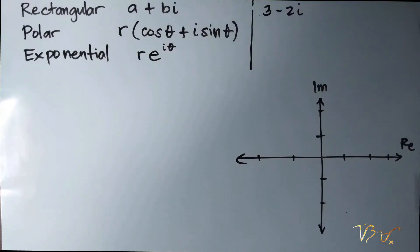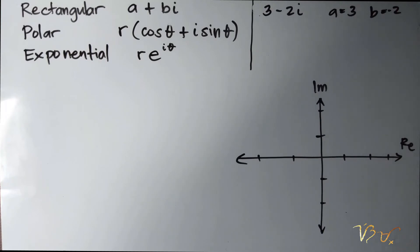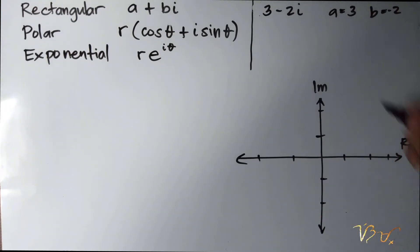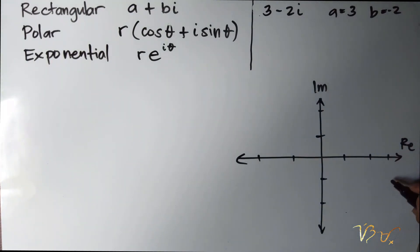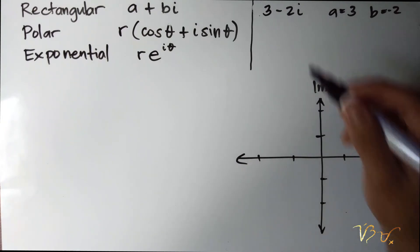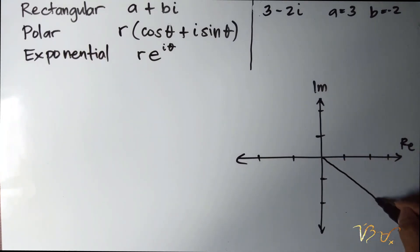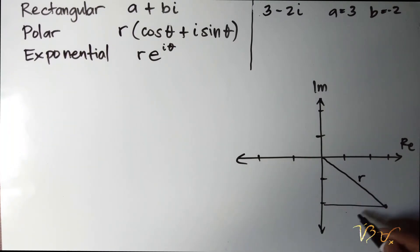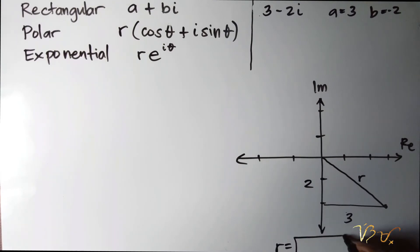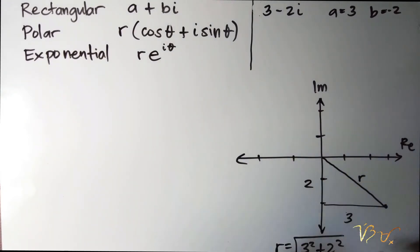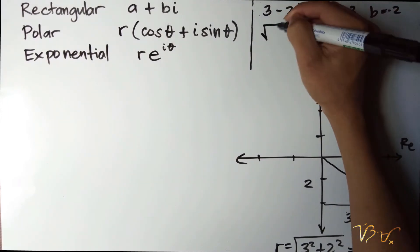For example 3: 3 minus 2i. We have a equal to 3 and b equal to negative 2. In the Argand diagram, the positive real part is 3 and b is negative 2. To transform this into polar form, we need the modulus — the distance from the origin to the complex number. Using the triangle with sides 3 and 2: r equals square root of 3 squared plus 2 squared, which equals square root of 13.